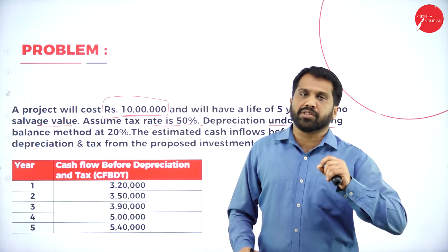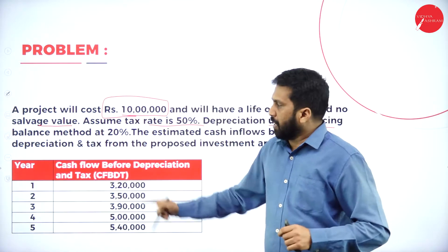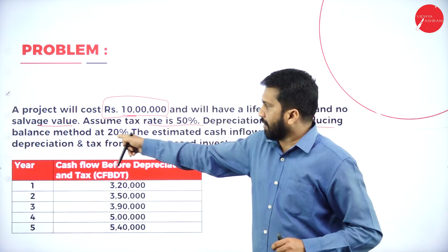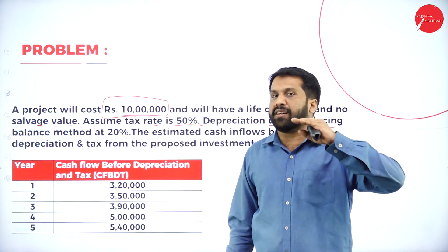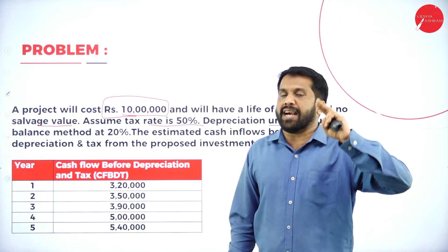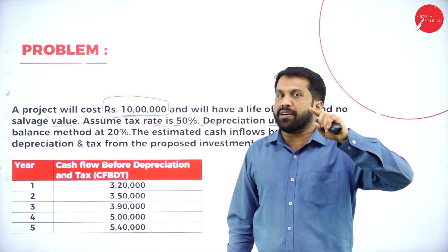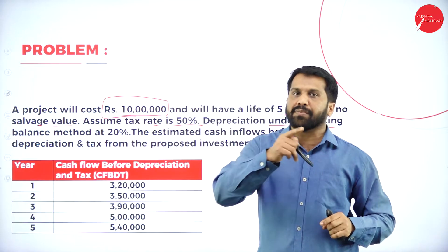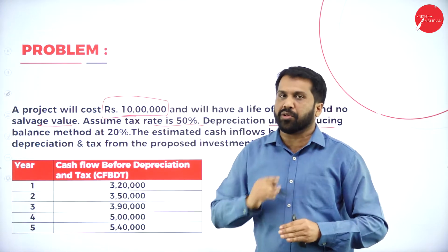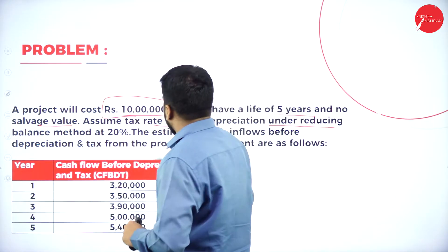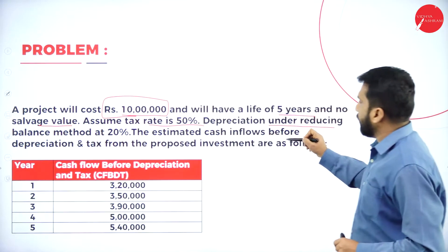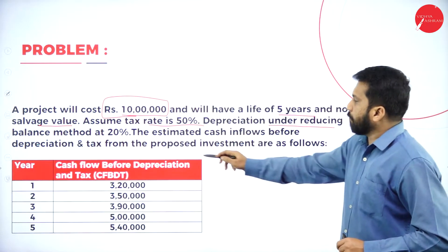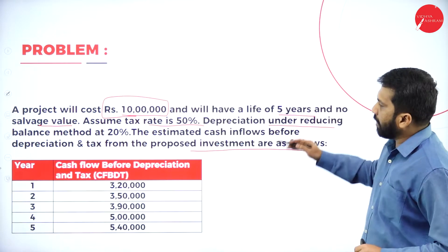Under the reducing balance method, every year the depreciation value will be reduced, so we cannot do 10 lakh divided by five years — that is the original cost method. For reducing balance method: 10 lakh into 20 percent = 2 lakh. 10 lakh minus 2 lakh = 8 lakh. On 8 lakh, 20 percent = 1 lakh 60. I'll show you the calculation now.